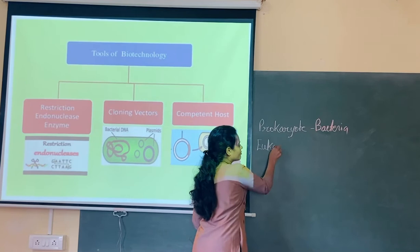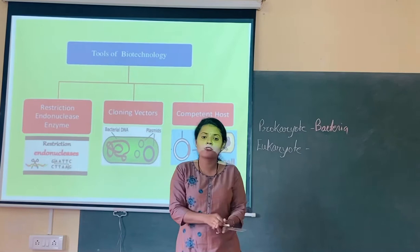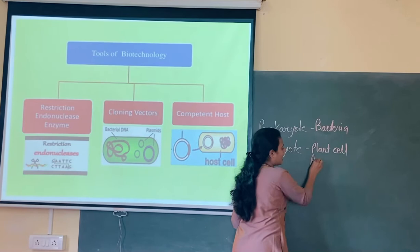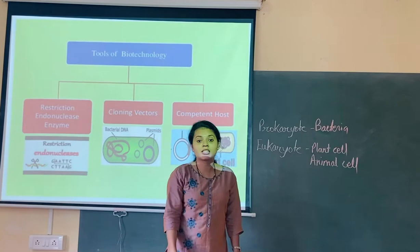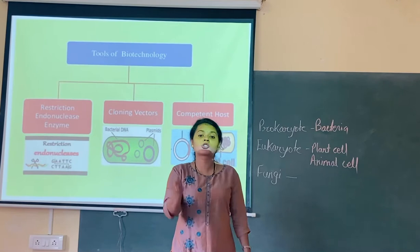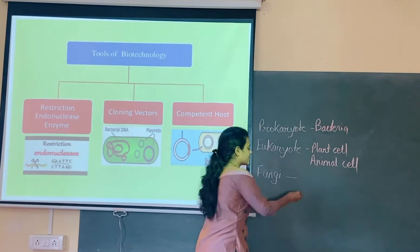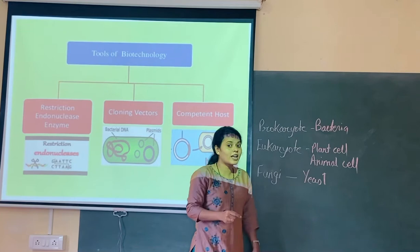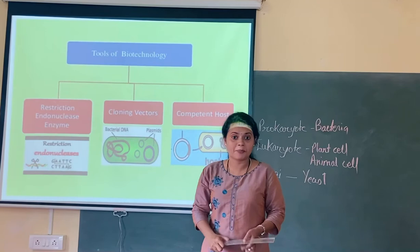If I am talking about eukaryotic hosts, eukaryotic can be different types of organisms. It can be a plant cell. It can be an animal cell. And apart from this, fungi can also act as a host. In fungi, the most common organism used in recombinant DNA technology is yeast, because it is easy to handle — a unicellular organism that can easily be cultivated and multiplied. So these are the host organisms which are used.